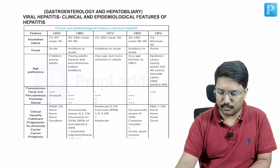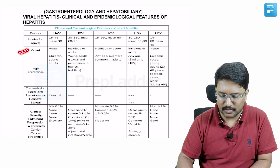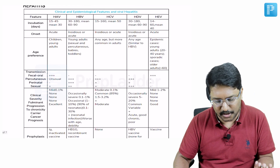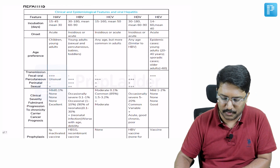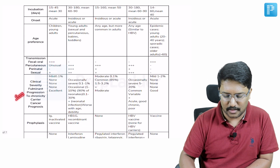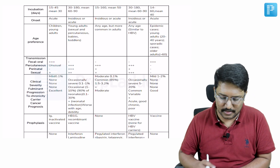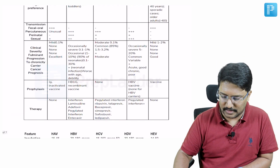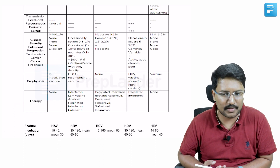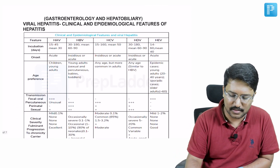This table compares most of the important things: the incubation period, the onset of symptoms — whether acute or insidious — the age preference, the route of transmission, clinical severity, whether it can cause fulminant liver failure or will be a mild illness, whether we have a vaccine for prophylaxis, and what treatment we can offer.